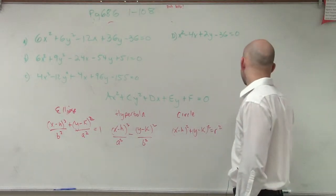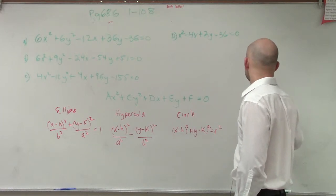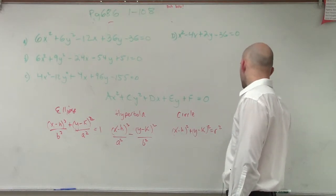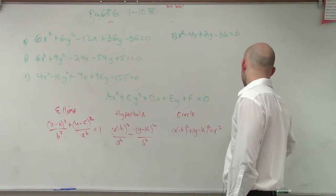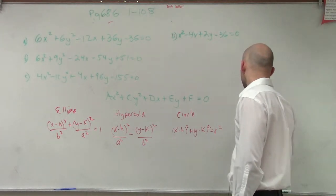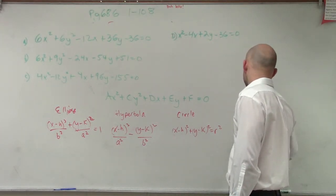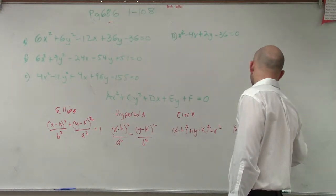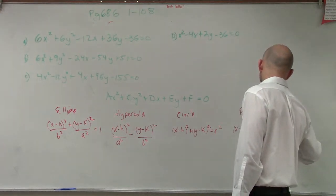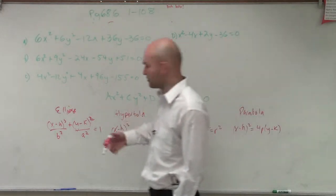And then let's look at a parabola. And let's just do x squared, or keep the center - (x minus h) squared equals 4p (y minus k). Right? So those are kind of your general forms.